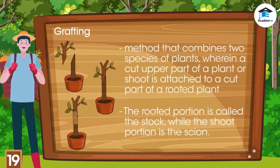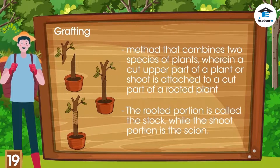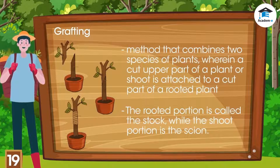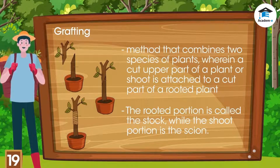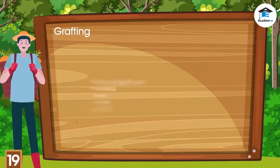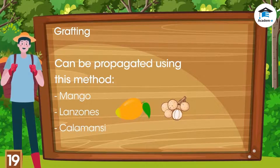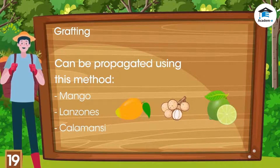Grafting is a method that combines two species of plants, wherein a cut upper part of a plant or shoot is attached to a cut part of a rooted plant. The rooted portion is called the stock, while the shoot portion is the scion. Mango, lansones, and calamansi are propagated through this method.